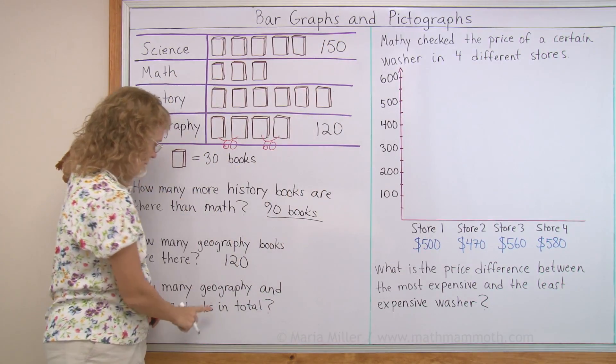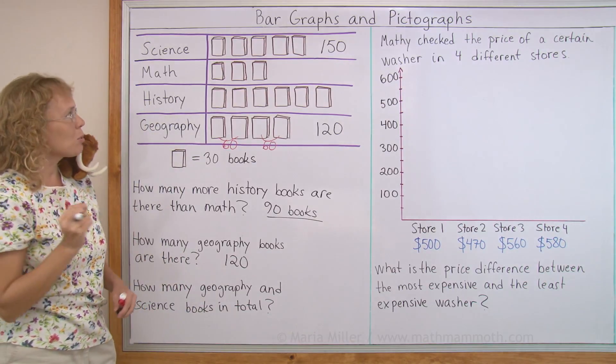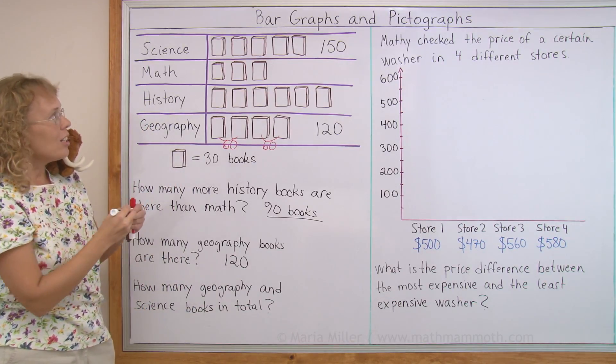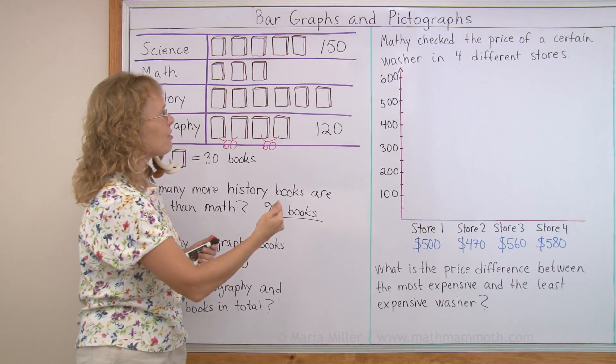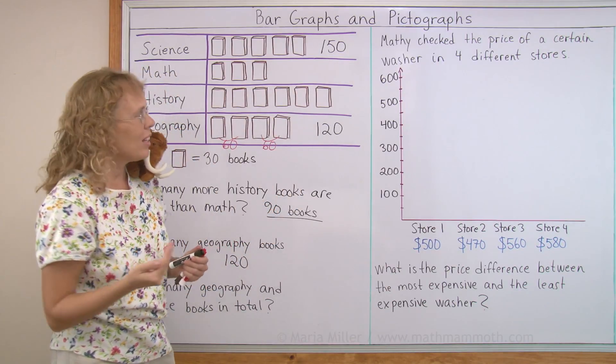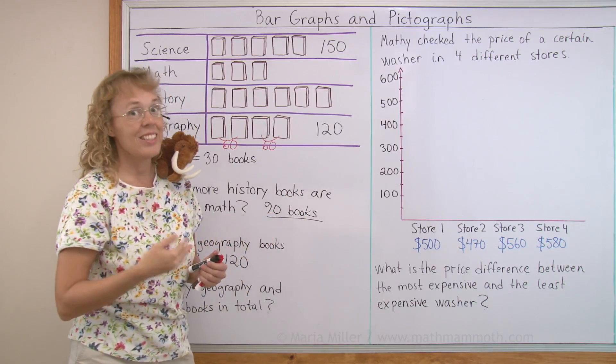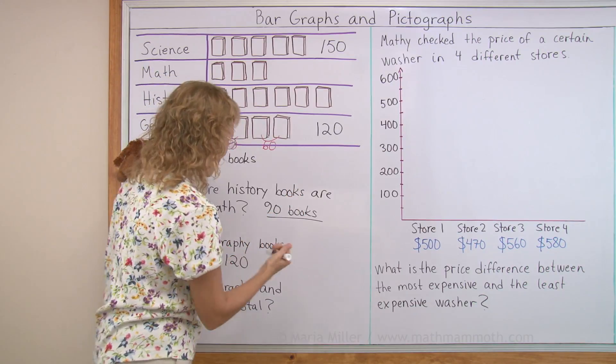And now to solve this question here. How many geography and science books together or in total? So I need to add these two numbers. 150, 120. It would make 270. Yes, 270.